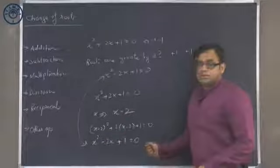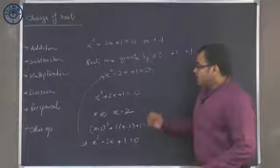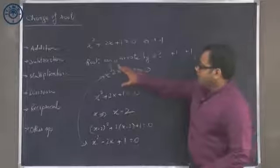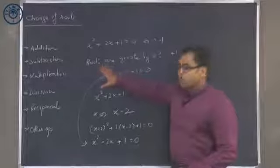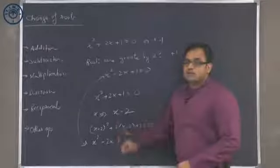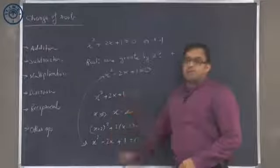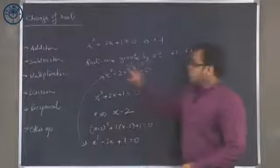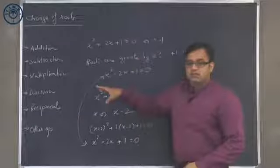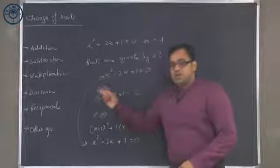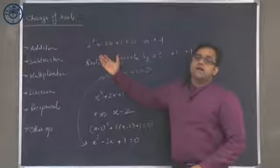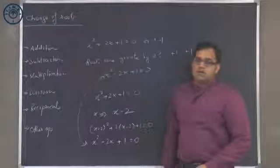Is there a coincidence? No, it is not. There is a method here. If I am looking for roots that are greater by 2, I substitute x minus 2. If I am looking for roots that are less by 3, I substitute x plus 3. Whatever you are looking for, do the opposite of that with x and you will get your result.